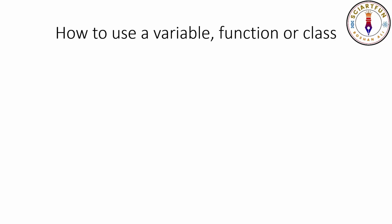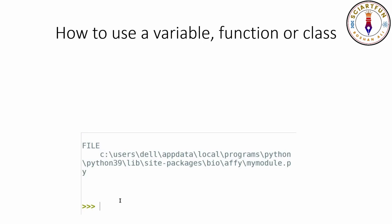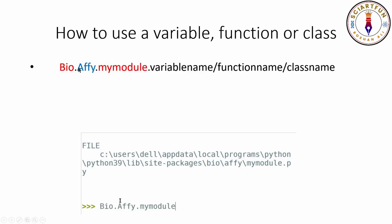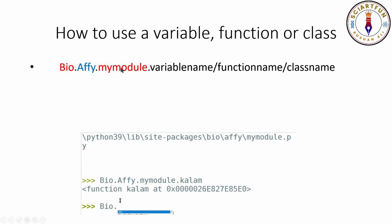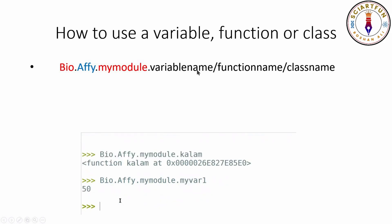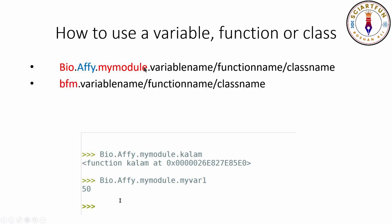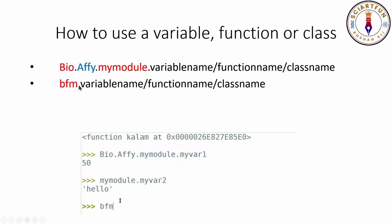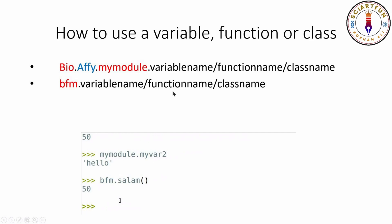Now let's come to our third objective: how to use a variable, function, or class. If you imported your module with 'import Bio.Align.my_module', type that whole path, put a dot, and then type the name of the variable, function, or class you want to use. If you imported your module as bfm, type 'bfm.' followed by the name. You saw that bfm contained two variables, two functions, and two classes — you can access any of them this way.